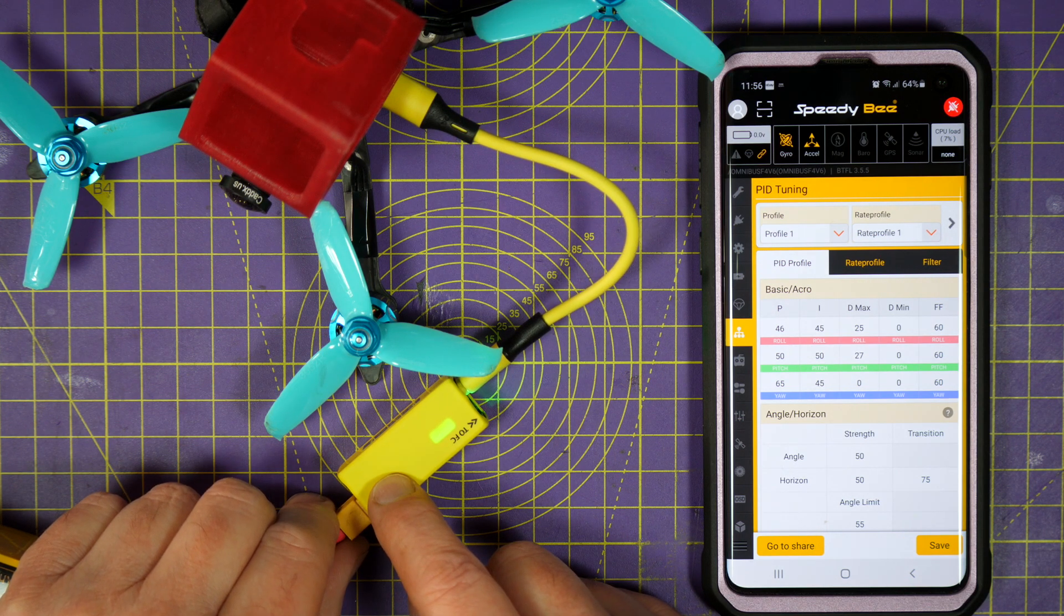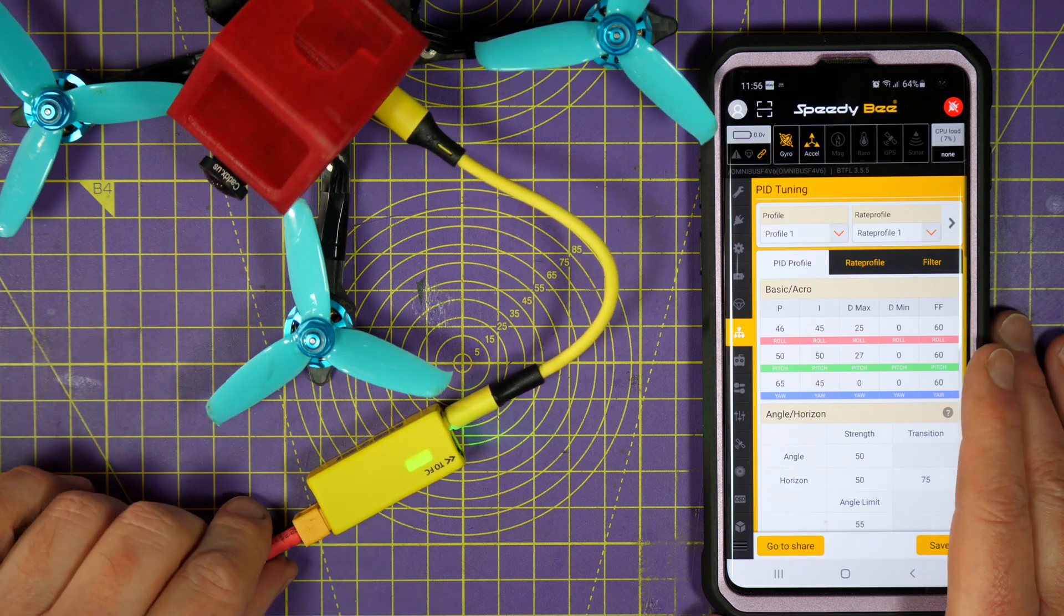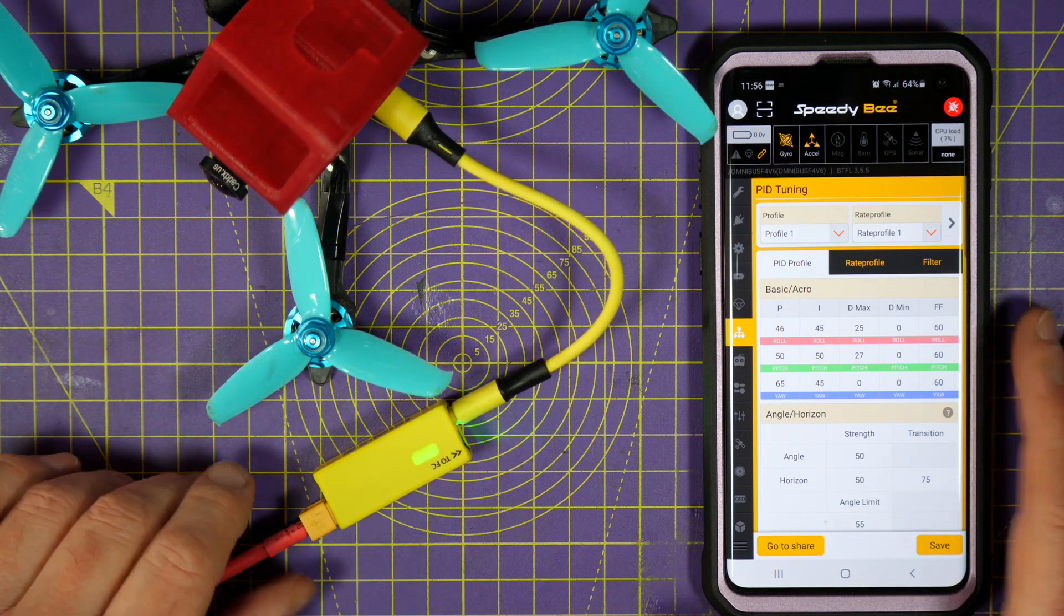There's a few things you need to be aware of though. The Speedy B app is Android only at the moment. And, I've no idea if Runcam intend to release an iOS version.